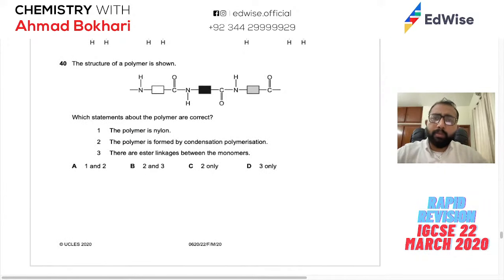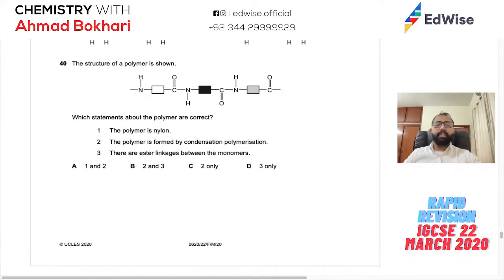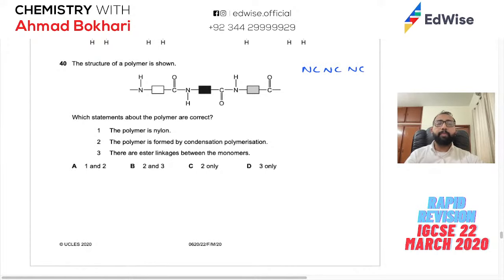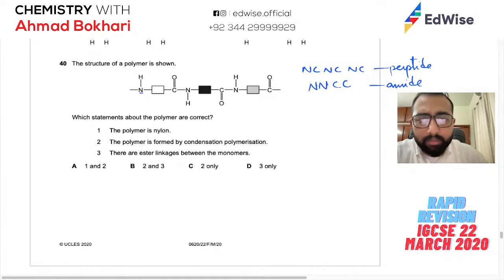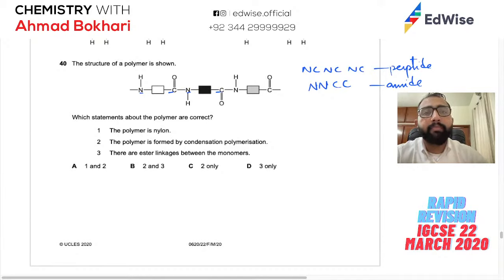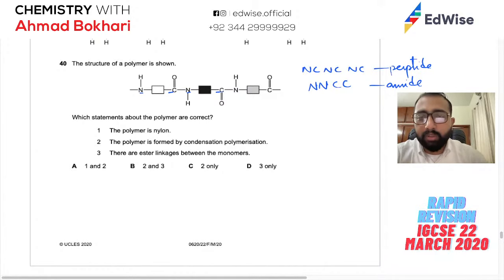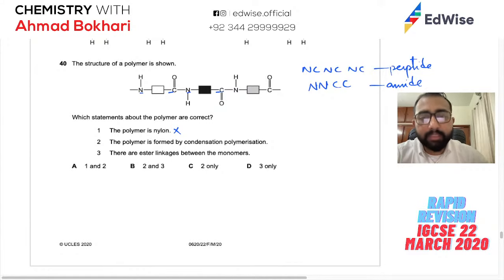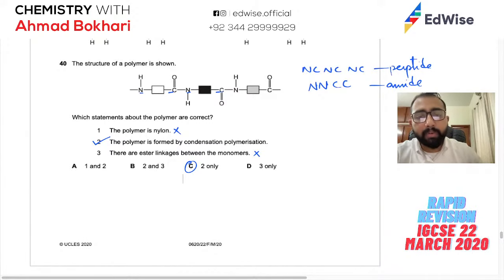Last question: a polymer structure is shown. To identify the bond type: if the repeating unit shows N–C=O with an alternating NC pattern (flipping NC-NC), it's a peptide/amide bond — this is a protein. If the pattern is NN-CC it's a nylon-type amide. The structure shown has peptide linkages — it's a natural condensation polymer (protein), not nylon. It is formed by condensation polymerization and has amide linkages, not ester linkages. Answer: 2 only (formed by condensation).